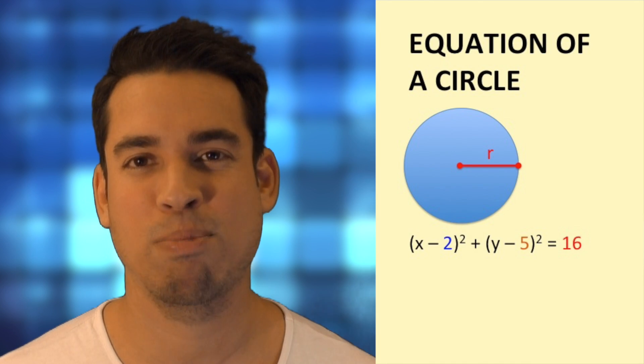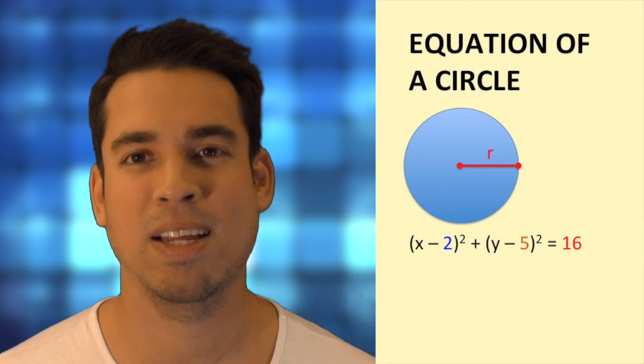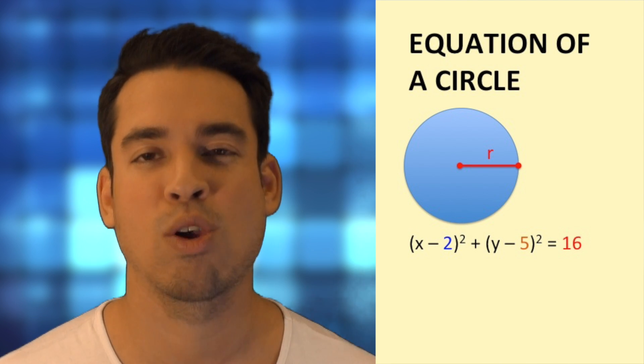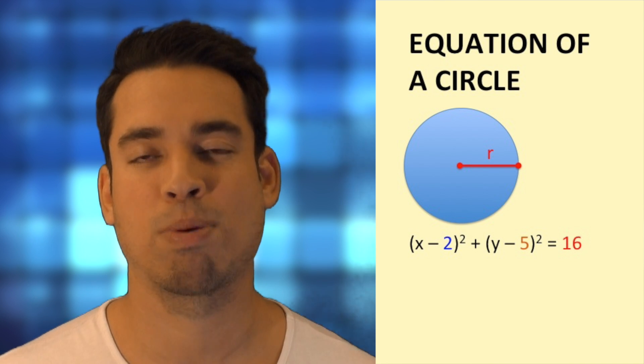Let's take a quick example of a possible equation for a circle. So in this case, we have x minus 2 squared plus y minus 5 squared equals 16. So what are all these parts?